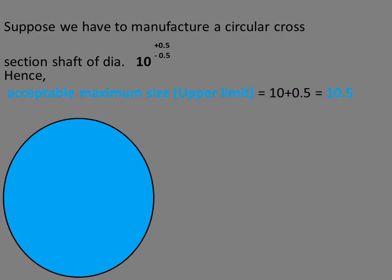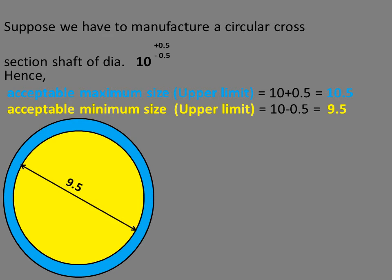Suppose we have to manufacture a circular cross-section shaft of diameter 10 with plus/minus 0.5 deviation. Hence, the acceptable maximum size will be 10.5 and the acceptable minimum size will be 9.5.